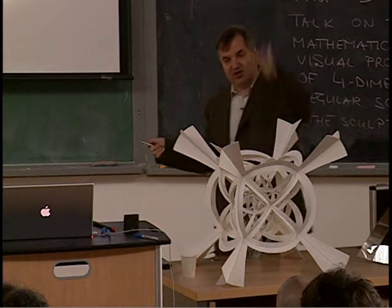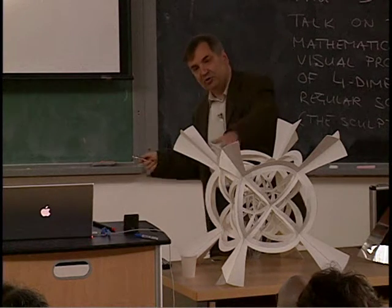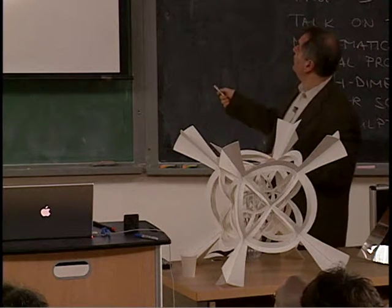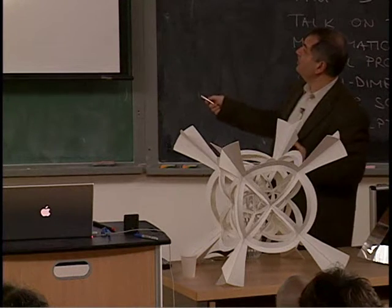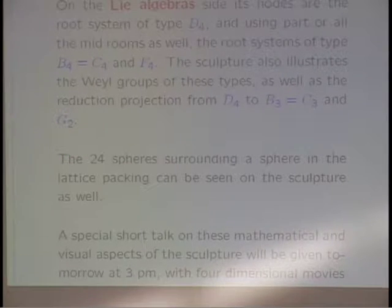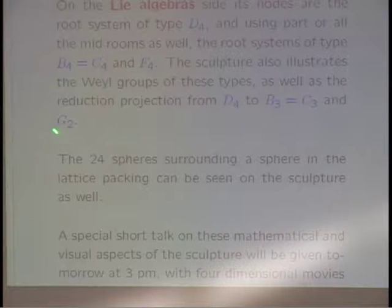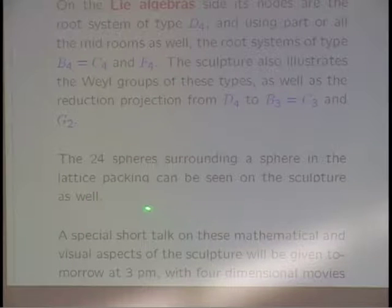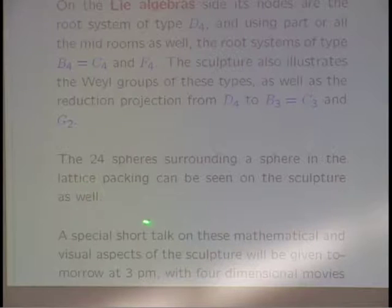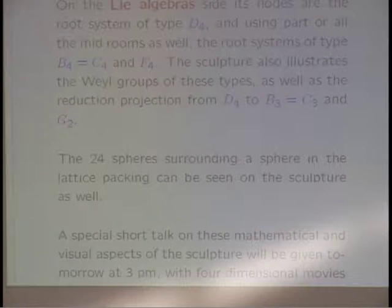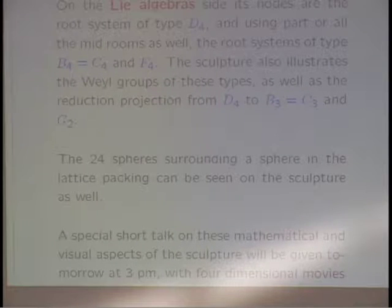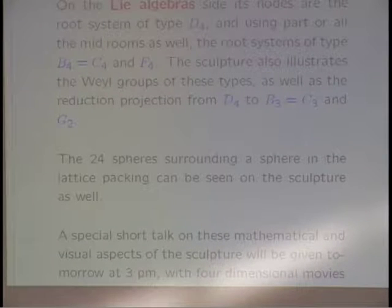In particular, projecting on a plane first, then on an edge, one gets the root systems of type B3, C3, and respectively G2 — so one can see exactly how these structures arise. The vertices are also encoding the 24 spheres which surround a sphere in the lattice, in the closest lattice packing, which is tight precisely in dimensions 2, 4, 8, and finally the Leech lattice 24.